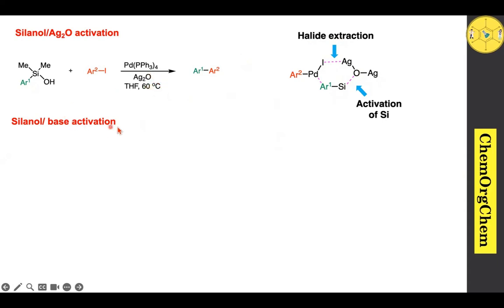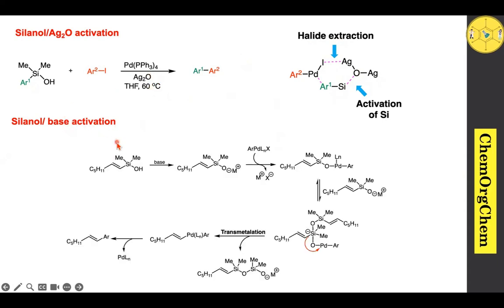Instead of silver oxide, a base can be used for base-mediated activation of silanol. The silanol initially reacts with the base to produce a siloxy anion species. This siloxy anion interacts with the palladium species to produce an intermediate, which reacts once more with the siloxy anion to give another intermediate ready for transmetallation, transferring the alkenyl group into the palladium species. The resulting intermediate then undergoes reductive elimination to give the product.